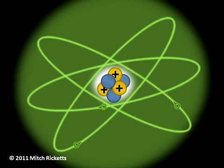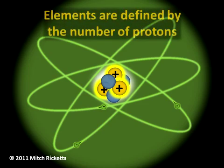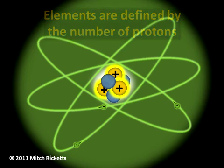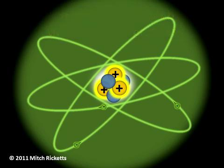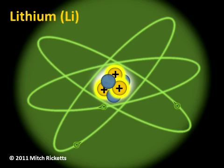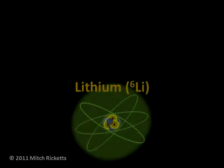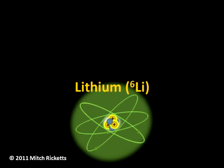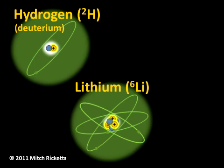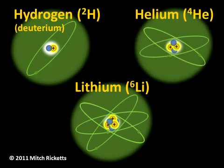Elements are defined by the number of protons in the atom's nucleus. In other words, all atoms of a particular element have the same number of protons. For instance, the element lithium has three protons. While lithium has three protons, hydrogen has just one proton in its nucleus. Helium has two.